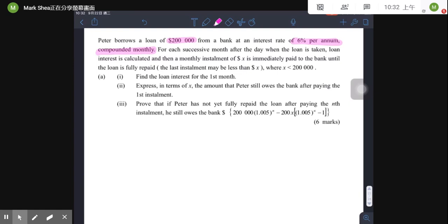And the first one, the loan interest for the first month. So interest equals the 200,000 and then times 6% divided by 12. Okay, so this is the interest. So the answer is $1,000.